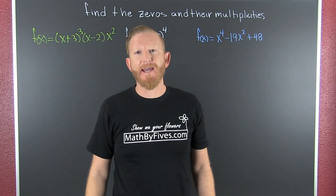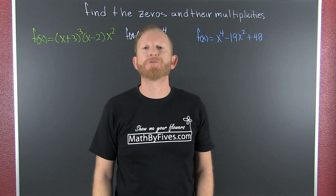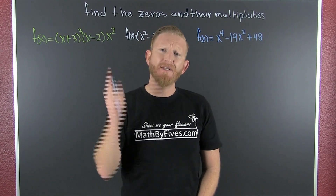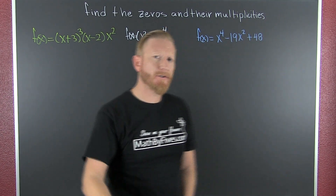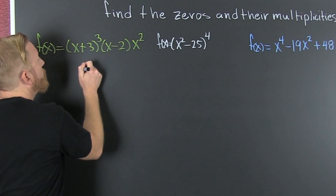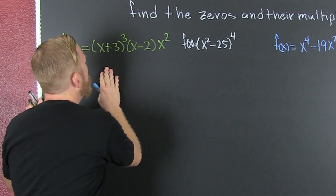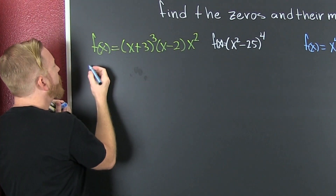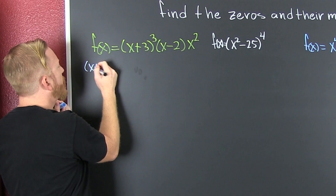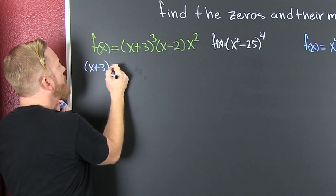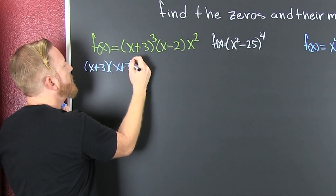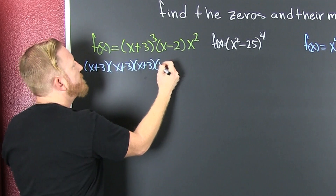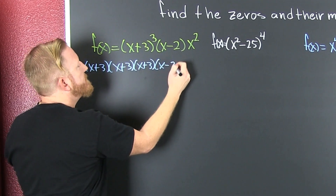Now we're going to find the zeros and their multiplicities — we want to know how many times they occur. We could write it as (x + 3)(x + 3)(x + 3)(x - 2).